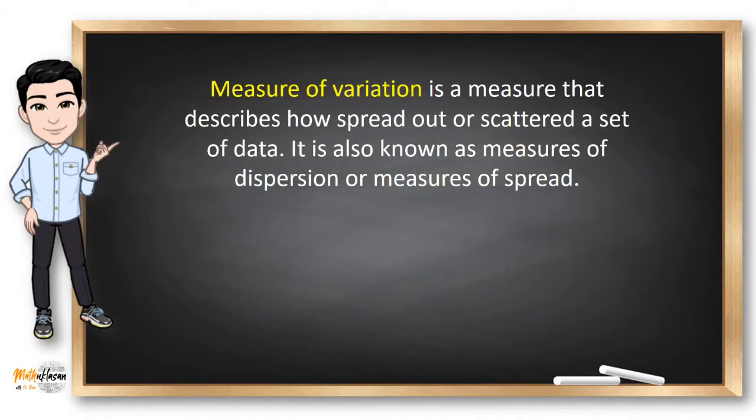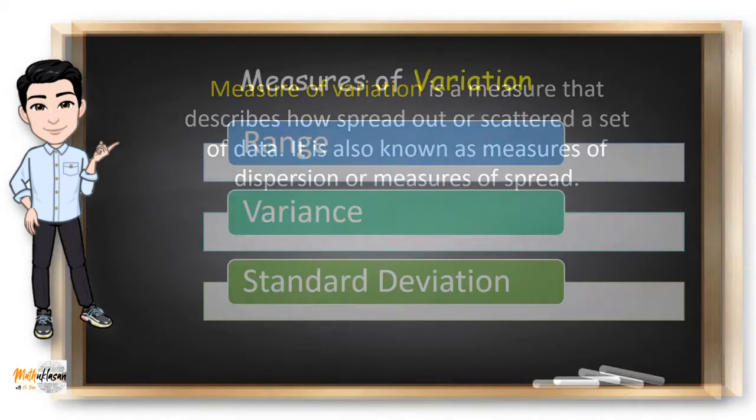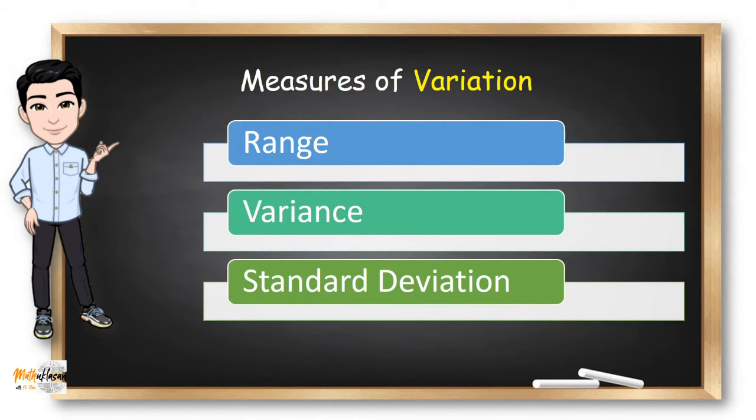In addition to central tendency, every dataset can be characterized by its variation and shape. Variation measures the spread or dispersion of values in a dataset. Some commonly used measures of variability are the range, variance, and standard deviation.